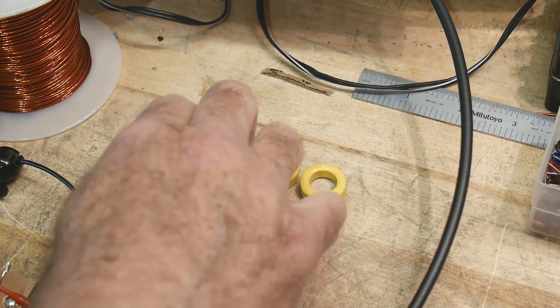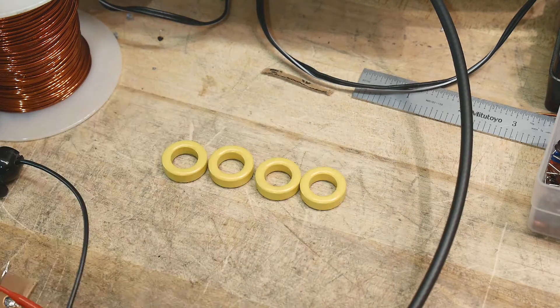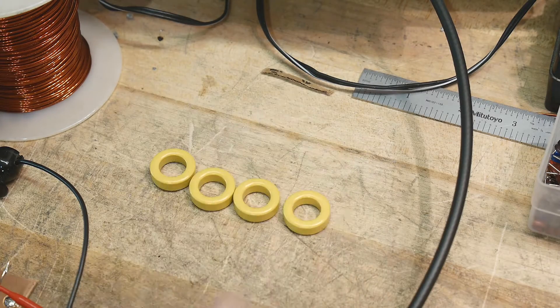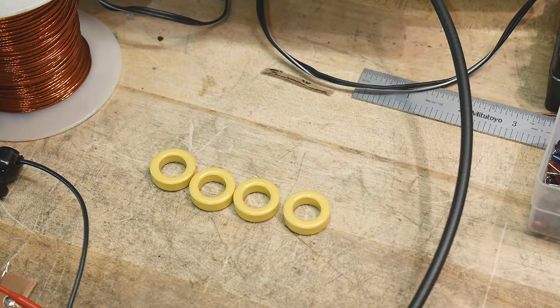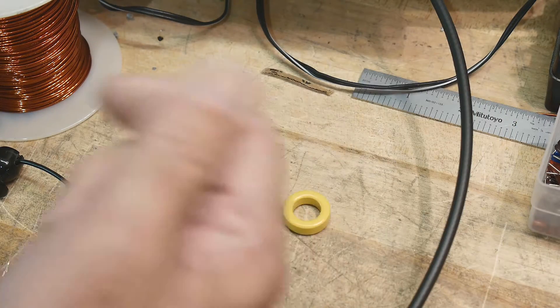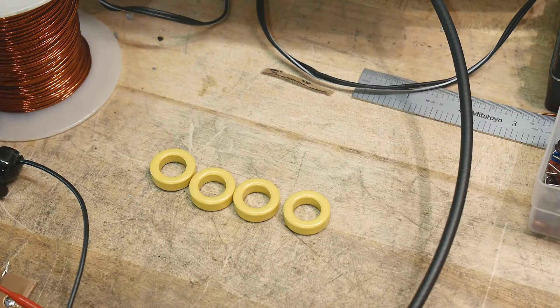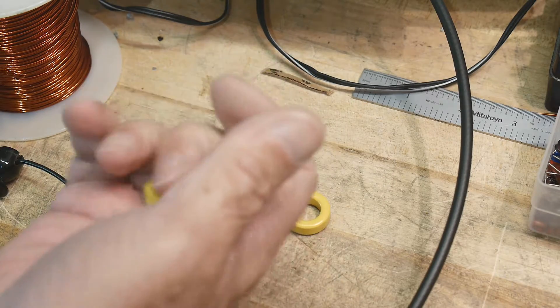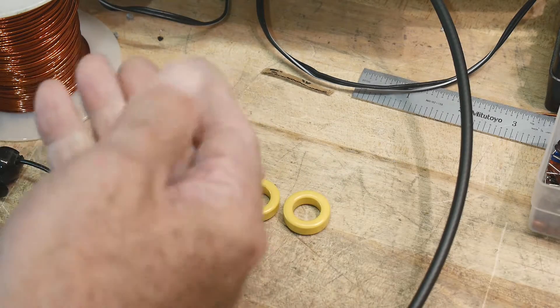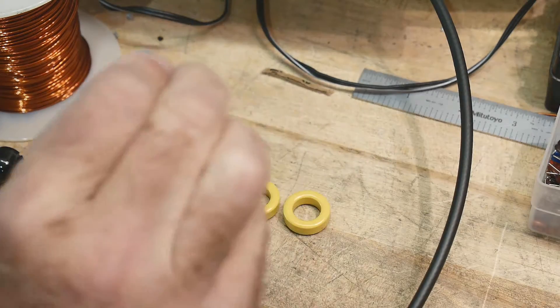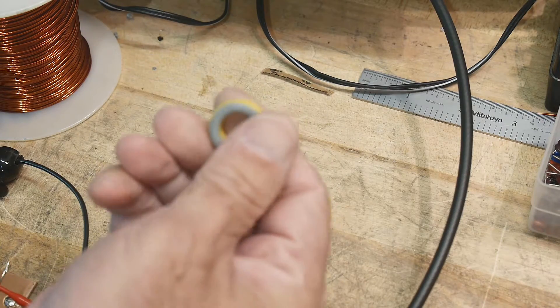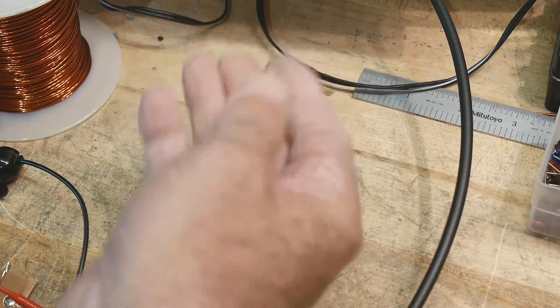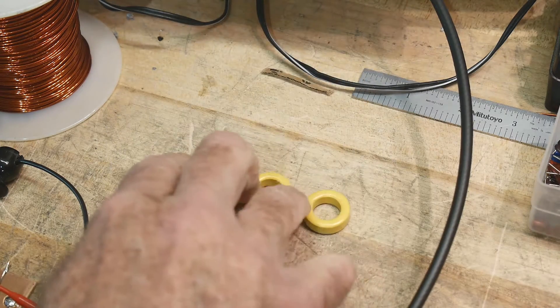Now iron core toroids are great for switching power supplies I think. There's a difference between using ferrite which is an iron oxide and ceramic, and these guys which are like an iron powder that's sintered or something. These are iron based and the other ones are ceramic based.